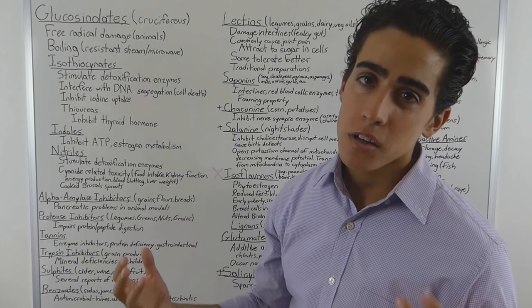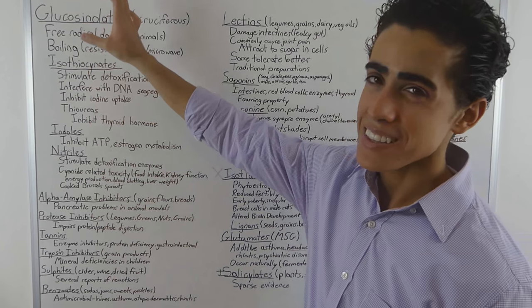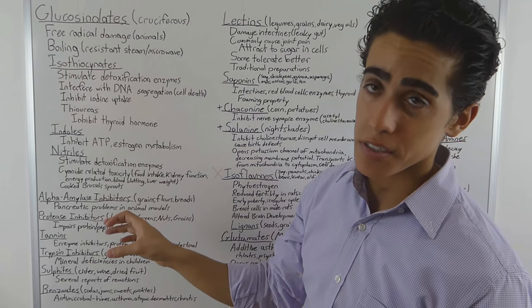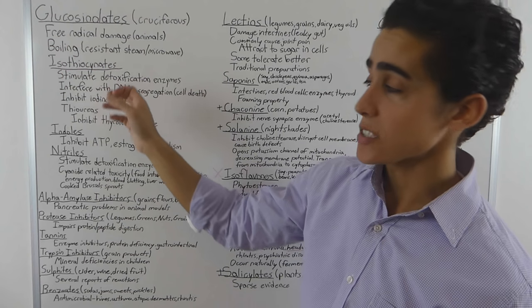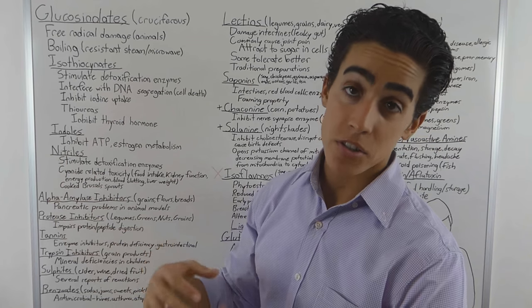And most people consume vegetables either lightly cooked or raw. So, the levels of these other substances that are produced by glucosinolates are generally not inhibited by cooking because they're just not cooked long enough.